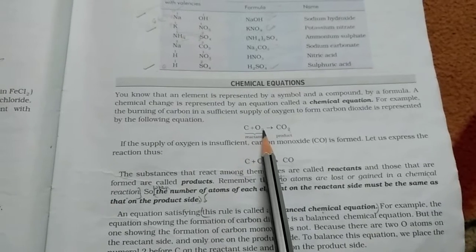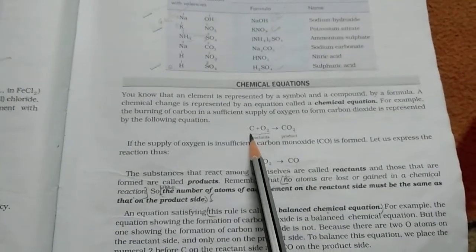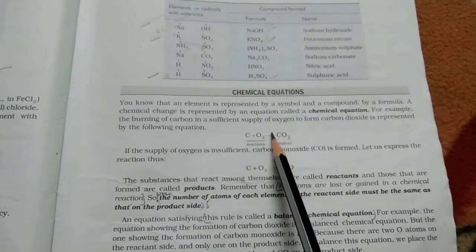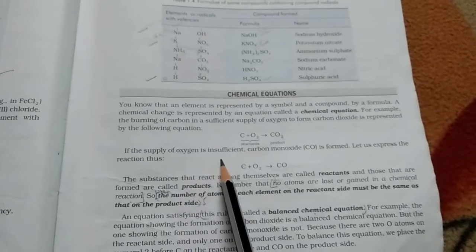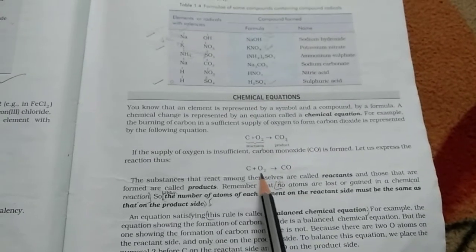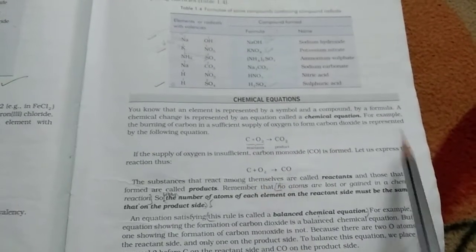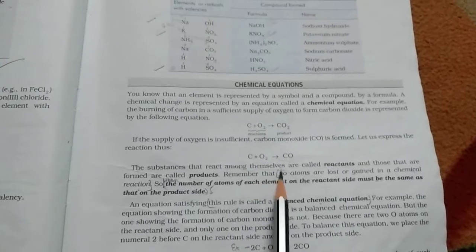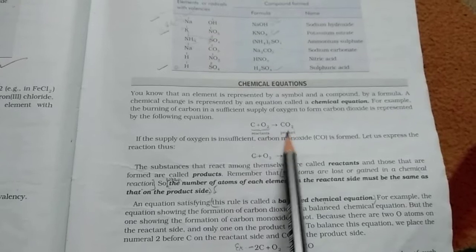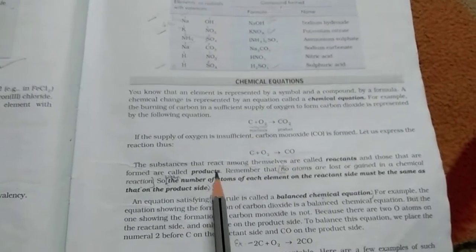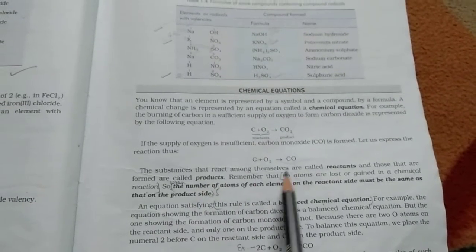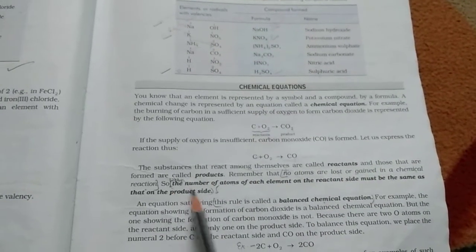Oxygen is required for the process of burning. Carbon and oxygen both are called the reactants and it form the product. If the supply of oxygen is insufficient, then carbon monoxide is formed and now the reaction is C plus O2 is equal to CO. The substances that react among themselves are called reactants. These are the reactants and carbon dioxide and carbon monoxide are the products. So, we can say the substances that react among themselves are called reactants and those that are formed are called products.